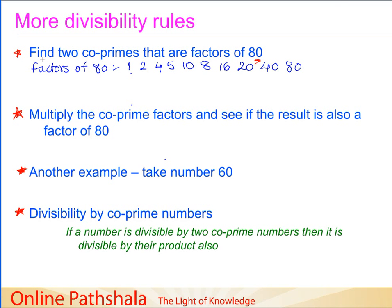Now we take any two co-prime factors — we can take 4 and 5. When I say co-prime, it means 4 and 5 have only 1 as their common factor. We multiply these co-prime factors and check if their product is also a factor of 80. When I multiply 4 by 5, the result is 20, and we can locate 20 in the list of factors of 80. So 20 is indeed a factor of 80.